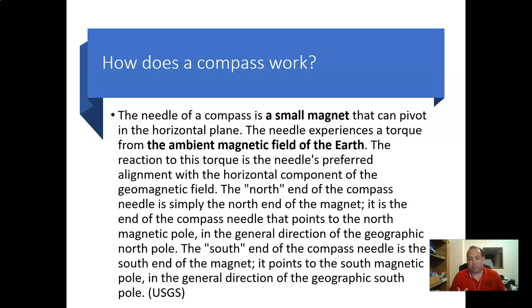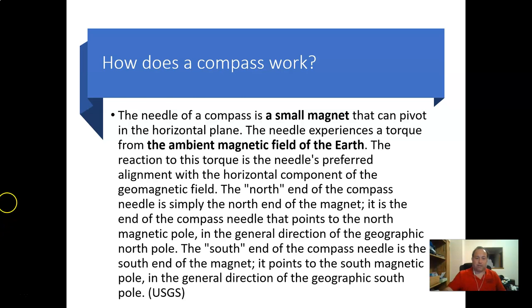The needle of a compass is a small magnet that can pivot in the horizontal plane. The needle experiences a torque from the ambient magnetic field of the Earth, and its preferred alignment is with the horizontal component of the geomagnetic field. The north end of the compass needle points to the north magnetic pole — in the general direction of the geographic north pole — and the south end points toward the south magnetic pole.